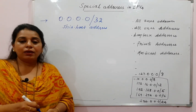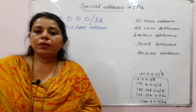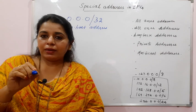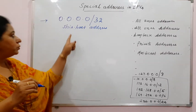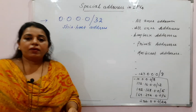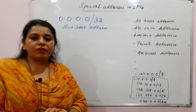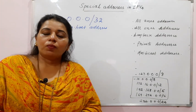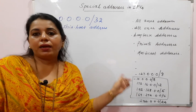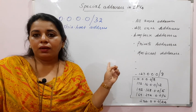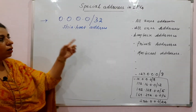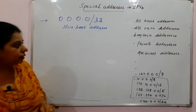The 'this host' address is used when a client doesn't know its own IP address. In that case, the source field in the message can use 0.0.0.0. Whenever a client is not aware of or doesn't know what IP address is assigned to its device or connection, it can make use of this address in the packet. That is why this address is considered a special address.